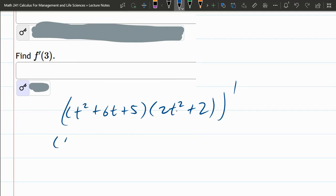So it is the first one, t squared plus 6t plus 5 prime. Now I'm just copying over the second one, 2t squared plus 2, not prime. So this is F prime, that's G.